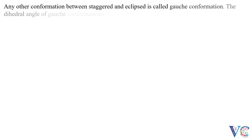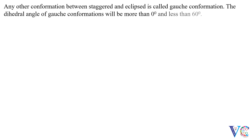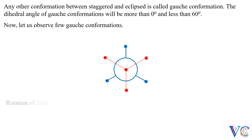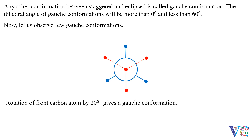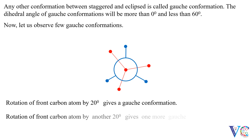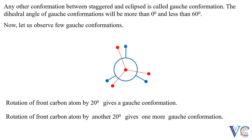Any other conformation between staggered and eclipsed is called gauche conformation. The dihedral angle of gauche conformations will be more than 0 degrees and less than 60 degrees. Now let us observe a few gauche conformations. Rotation of the front carbon atom by 20 degrees gives a gauche conformation. Rotation by another 20 degrees gives one more gauche conformation. Further rotation by another 20 degrees gives the eclipsed conformation.